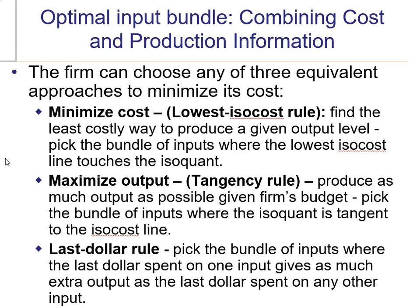The first approach is to minimize cost using the lowest isocost rule. This decision on how a firm minimizes its cost is very similar to the decision we previously discussed for the consumer — how the consumer chooses its optimal bundle of X's and Y's given a budget constraint. A firm is in the same situation: it has a budget constraint, an isocost curve, and its preferences — its isoquants. A firm wants to allocate its resources most efficiently by looking at both its isocost curve and its isoquant curve.